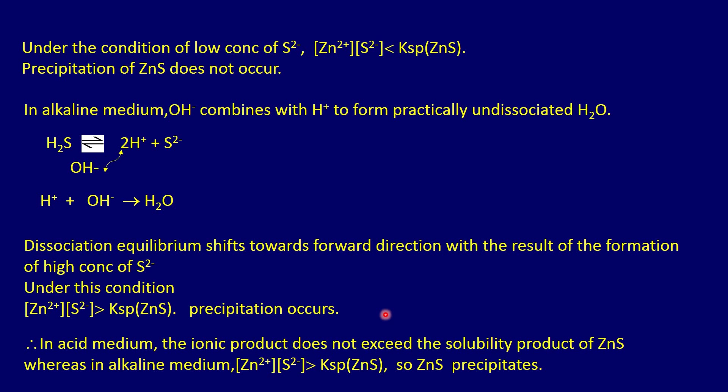This is why, in inorganic qualitative analysis for cation identification, the second group reagent is hydrogen sulfide in acid medium — but zinc is not precipitated in Group 2 along with copper, cadmium, lead, arsenic, antimony, and bismuth, all of which precipitate as sulfides in acid medium. Zinc remains in solution because its ionic product under low sulfide concentration does not exceed its solubility product. Zinc finally gets precipitated in Group 4, where hydrogen sulfide is passed in alkaline medium. This concludes Riddle Number 1. Please share your valuable suggestions and comments to encourage me.